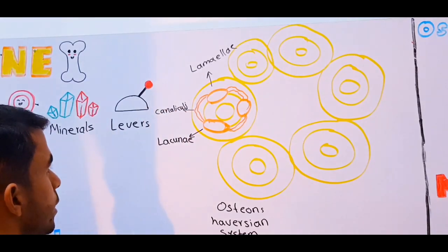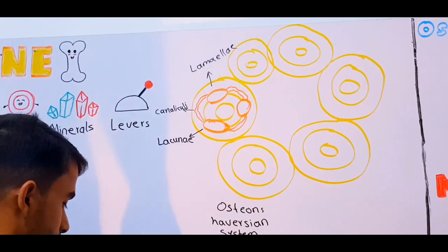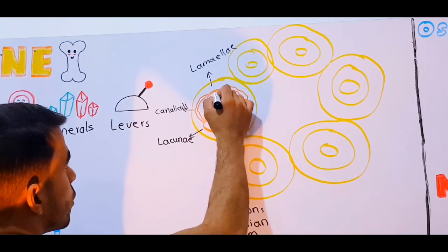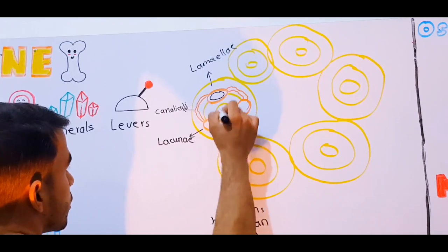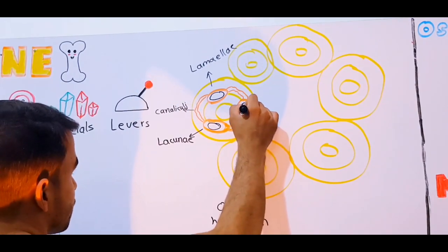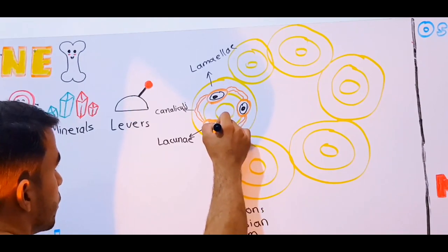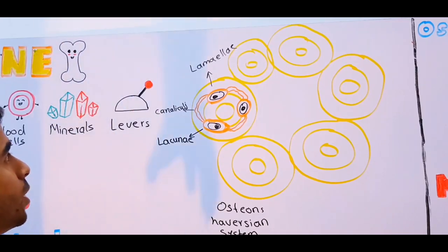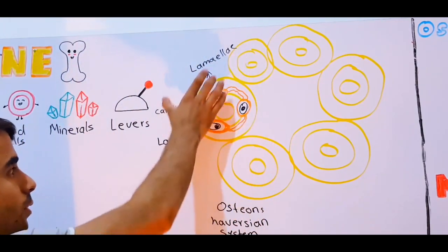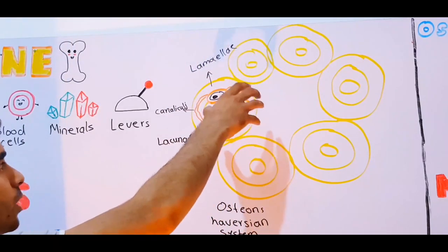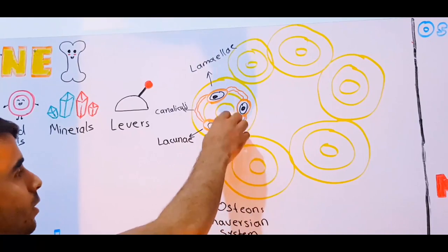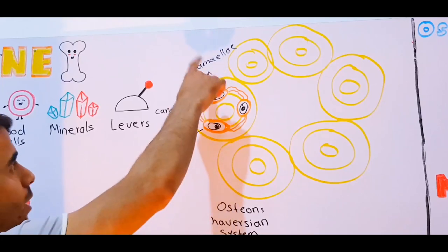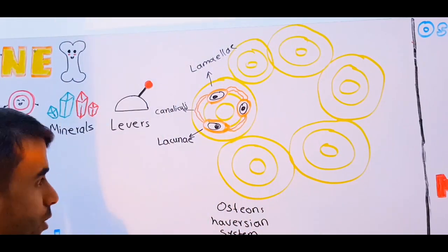Inside each of these lacunae sit your osteocytes. Each osteon has lacunae, canaliculi, and lamellas containing their osteocytes — this is the fundamental structural unit called the osteon or Haversian system.